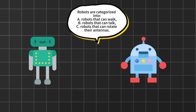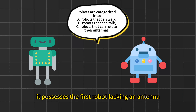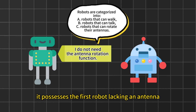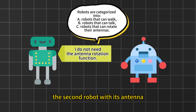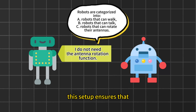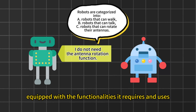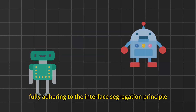In a revised design, each robot implements only the capabilities it possesses. The first robot, lacking an antenna, sticks to walking and talking. The second robot, with its antenna, manages all three tasks: walking, talking, and rotating the antenna. This setup ensures that each robot is only equipped with the functionalities it requires and uses, fully adhering to the Interface Segregation Principle.